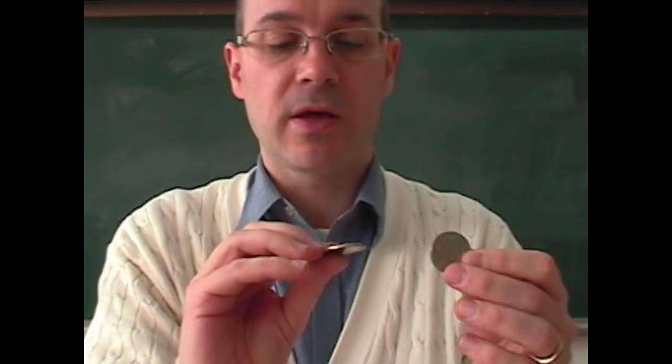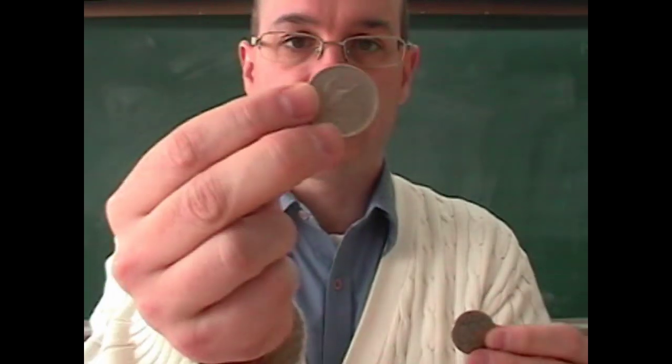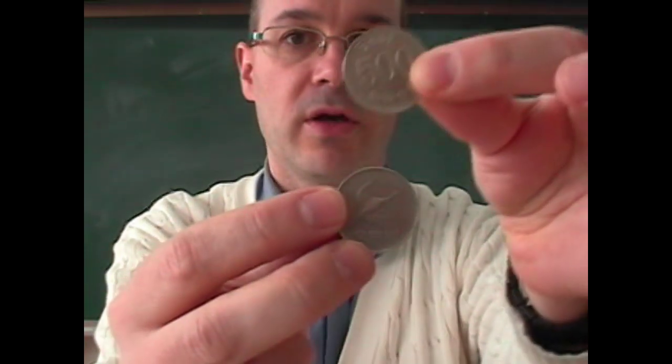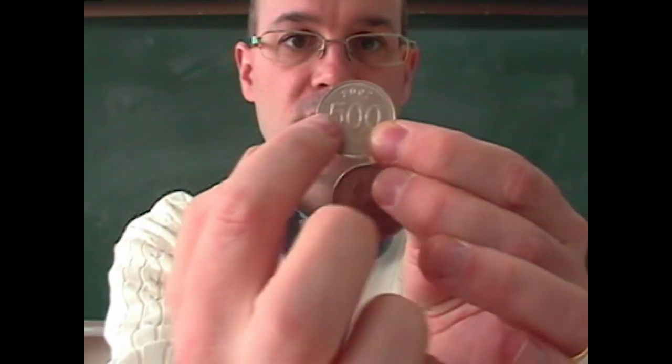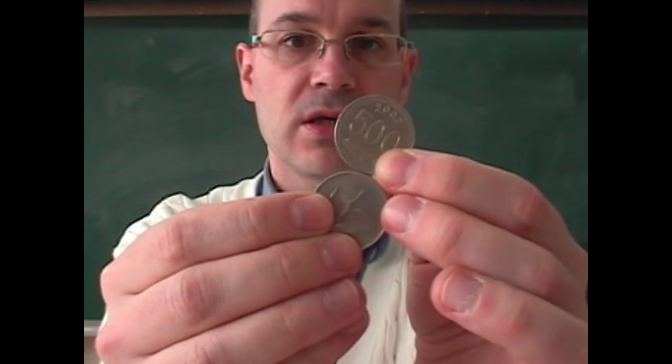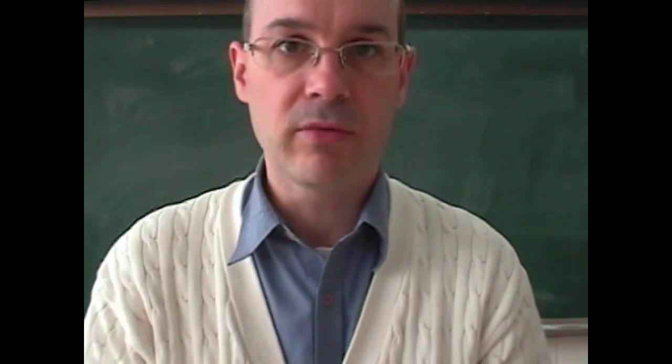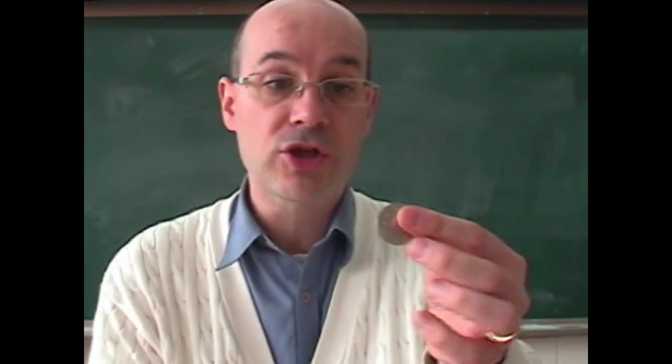My question is: you take this coin and put it like this, and you take that coin and put it on top of it with the 500 facing straight so you can read it easily. Then you're going to turn it without sliding all around your coin, and I'm going to ask you a very simple question.